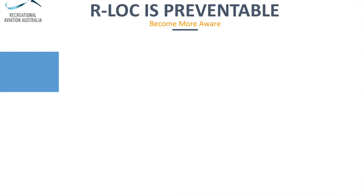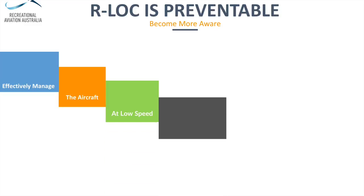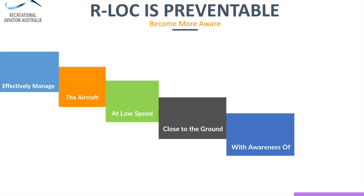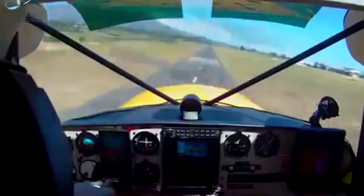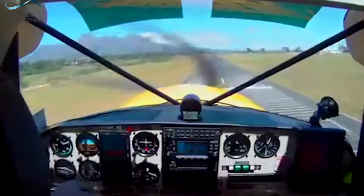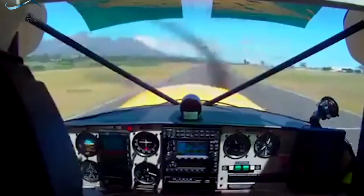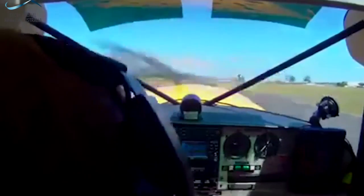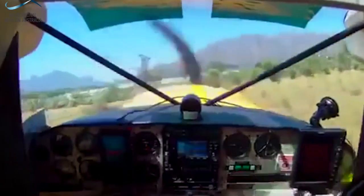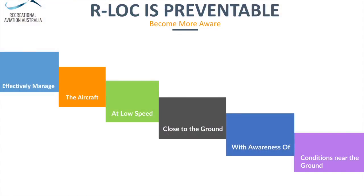Preventability is the key. We look at a range of data provided from the Occurrence Management System and are able to identify common trends. The runway loss of control event is the most significant incident type in Recreational Aviation Australia's assessments, and this has been borne out through worldwide data as well, particularly with light sport aircraft. They are preventable, but we need to look at how we can effectively manage the aircraft in this low-speed environment, both in take-off and landing close to the ground.